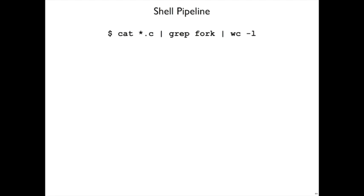And a shell does this when it wants to pipe together processes. So for example, if we cat all the C files, and then grep for the word fork in those files, and then all those matches are piped to the word count program to check how many lines are going to be found by grep.